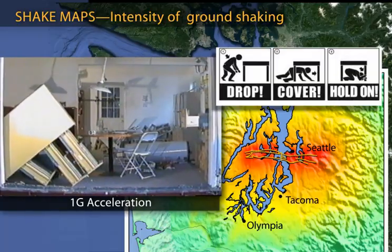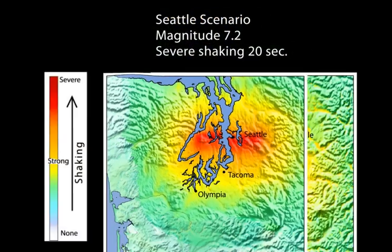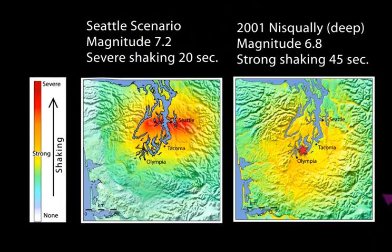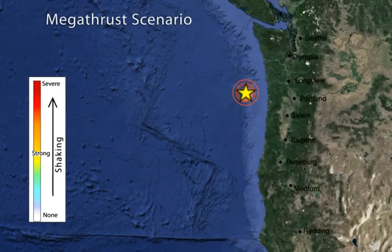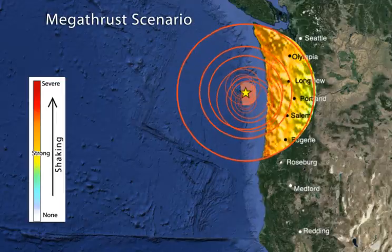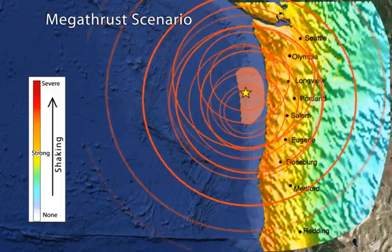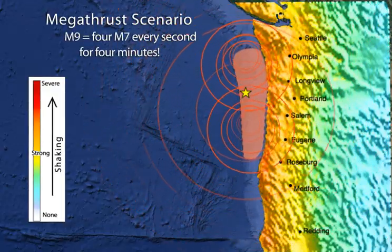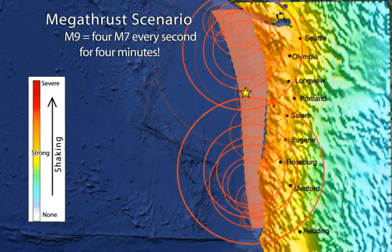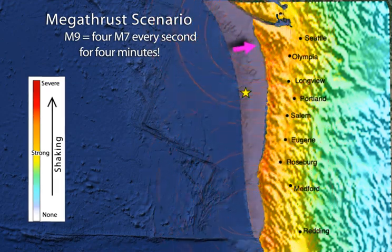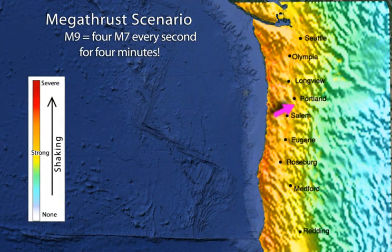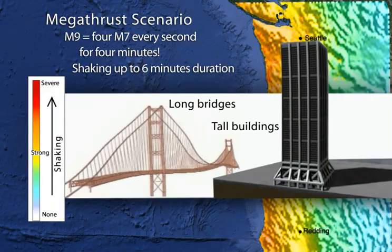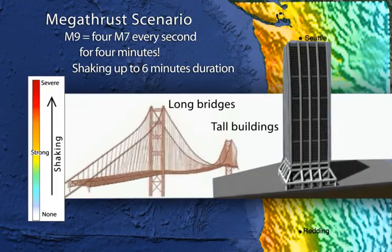How does shaking from the shallow Seattle earthquake differ from a deep one like the 2001 Nisqually earthquake? Because the hypocenter at Nisqually was 52 kilometers deep, the seismic energy spread out beyond Puget Sound rather than being concentrated near the epicenter as it would for a shallow earthquake. A magnitude 7 event has up to 20 seconds of severe ground shaking. A subduction zone megathrust earthquake, like Japan experienced in 2011, will have the broadest impact — a magnitude 9 earthquake releases the equivalent energy of four magnitude 7 earthquakes every second over a rupture interval of four minutes. Projected ground shaking will be severe at the coast but still very strong in the urban corridor, where it can last over six minutes with slow back-and-forth motions, particularly challenging for tall and long structures.